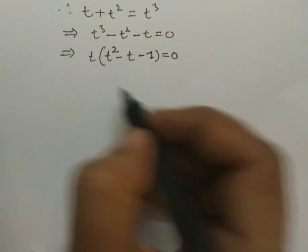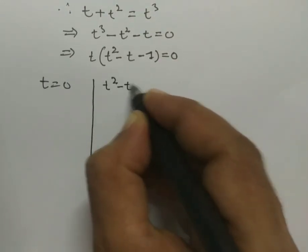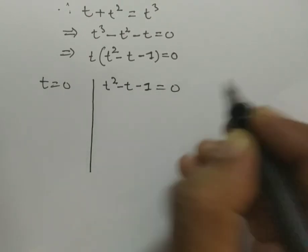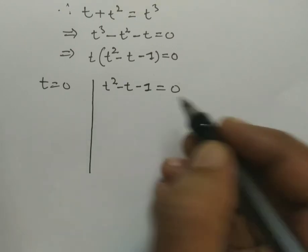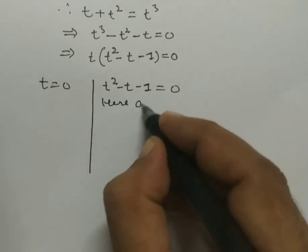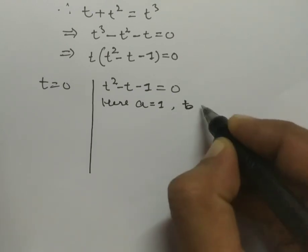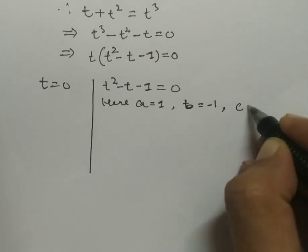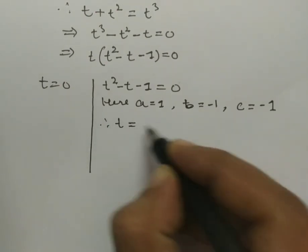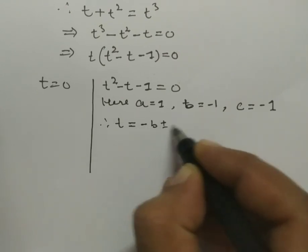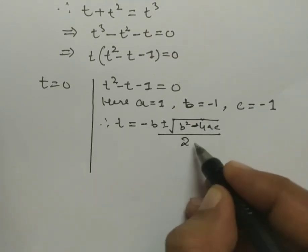The quadratic equation is t^2 - t - 1 = 0. The coefficient of t^2 is a = 1, the coefficient of t is b = -1, and the constant term is c = -1. Now, for the value of t, we apply the quadratic formula: t = (-b ± √(b² - 4ac)) / (2a).